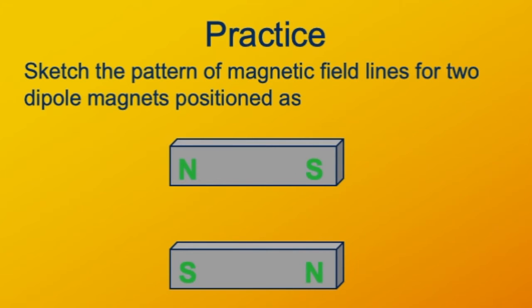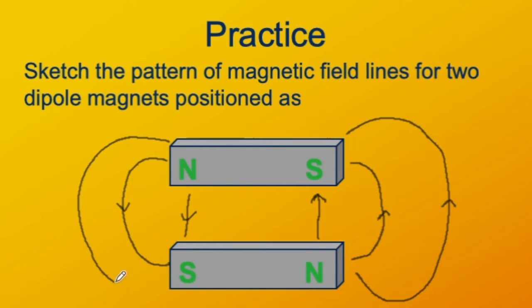Recall, magnetic field lines go from north to south poles. Pretty amateurish drawing, but you get the idea that the lines are pointing from north to south poles, away from north poles, and toward south poles.